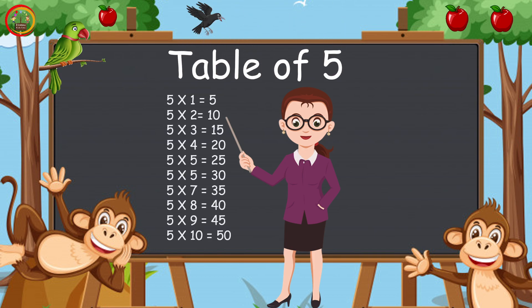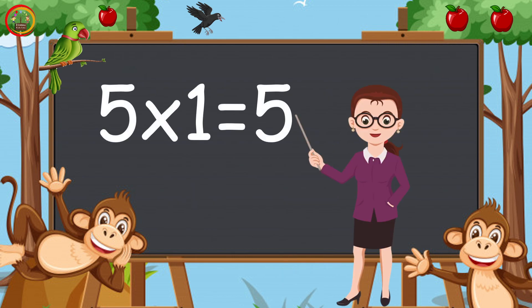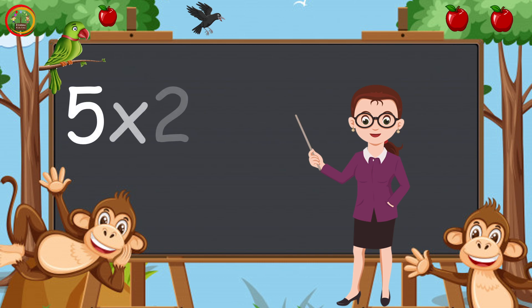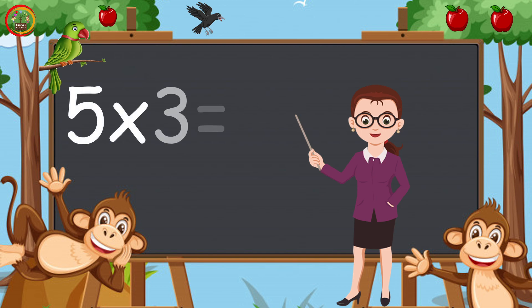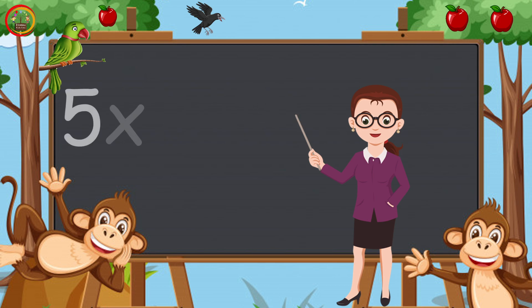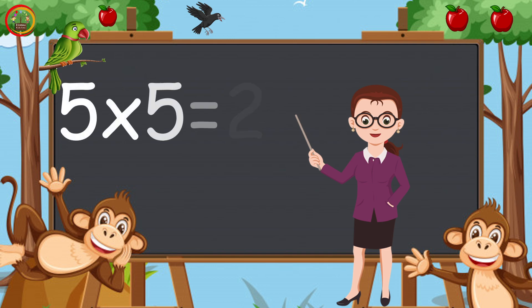So let's start. 5 times 1 is 5. 5 times 2 is 10. 5 times 3 is 15. 5 times 4 is 20. 5 times 5 is 25.